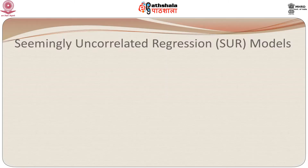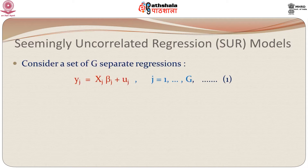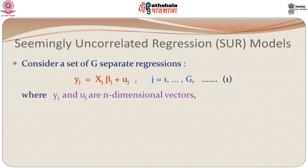The seemingly uncorrelated regression models are commonly known as the SUR models. Consider a set of g separate equations: y_j = x_j * beta_j + u_j, for j running from 1 to g. The x_j's are different for different equations — some may share the same variables, but very often they can be completely different variables. So what we could have done is looked at them separately.